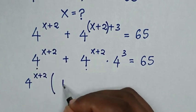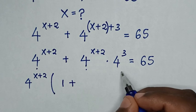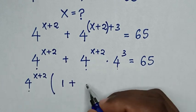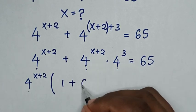Then this divided by this is 1, plus this divided by this is 4 power of 3, which is 64.